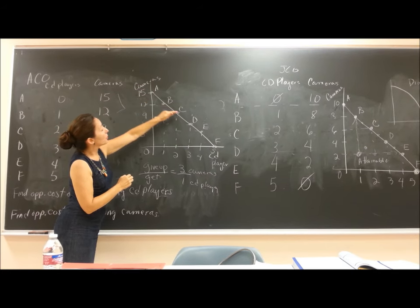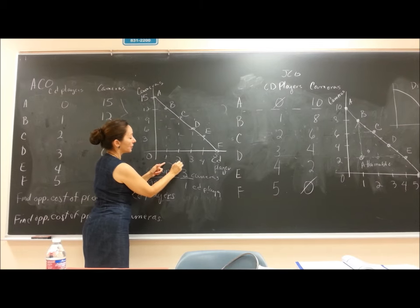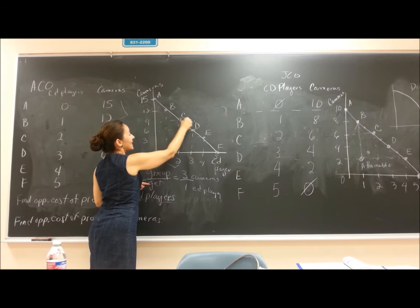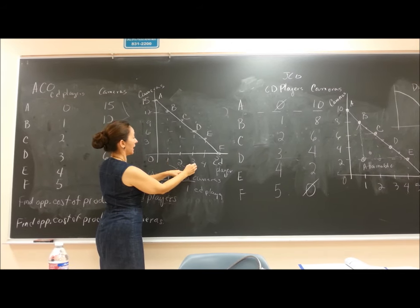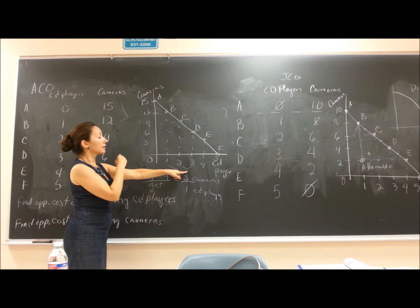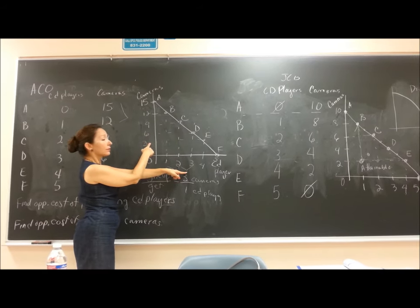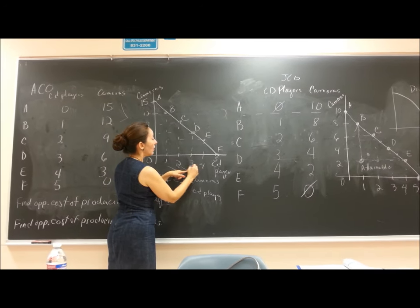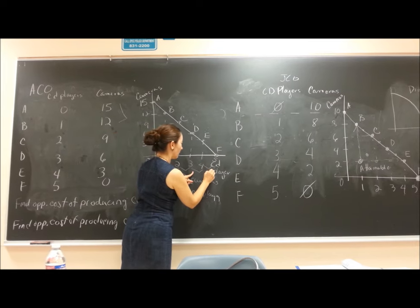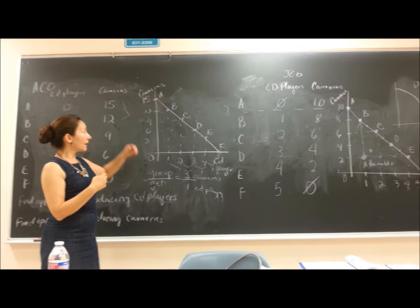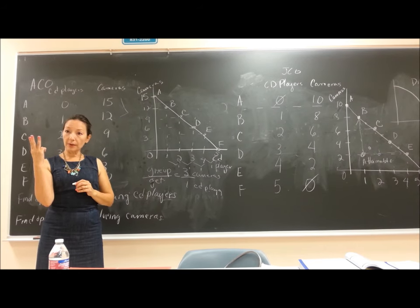Going from point B to C, we give up three cameras to get one more CD player. From C to D, we give up three cameras and get one more CD player. From D to E, we give up three cameras and get one more CD player. And from E to F, we give up three and get one more CD player. So the opportunity cost of producing one CD player for ACO is three cameras.